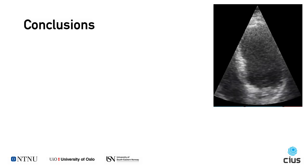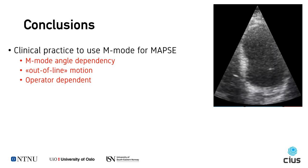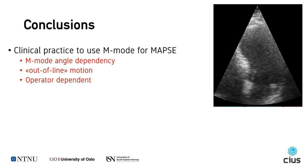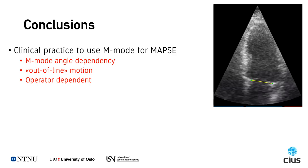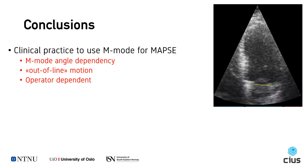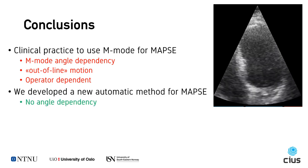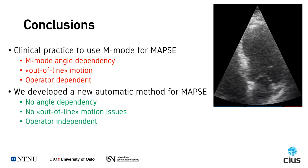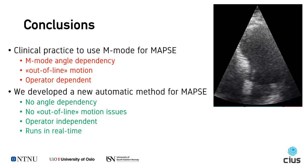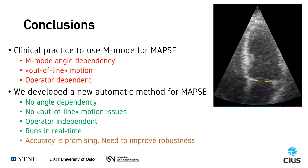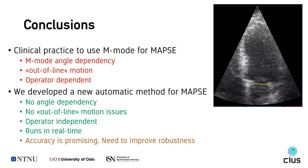To summarize, current clinical practice is to use M-mode for measuring MAPSE, which has several issues such as angle dependency and out-of-line motion, as well as being a manual and operator-dependent measurement. We have developed a new automatic method for MAPSE which does not suffer from these angle and out-of-line issues since it uses B-mode images. It is operator-independent and runs in real-time. While accuracy is promising, robustness needs to be improved, which we will address by increasing the training set size and improving the landmark detection network.